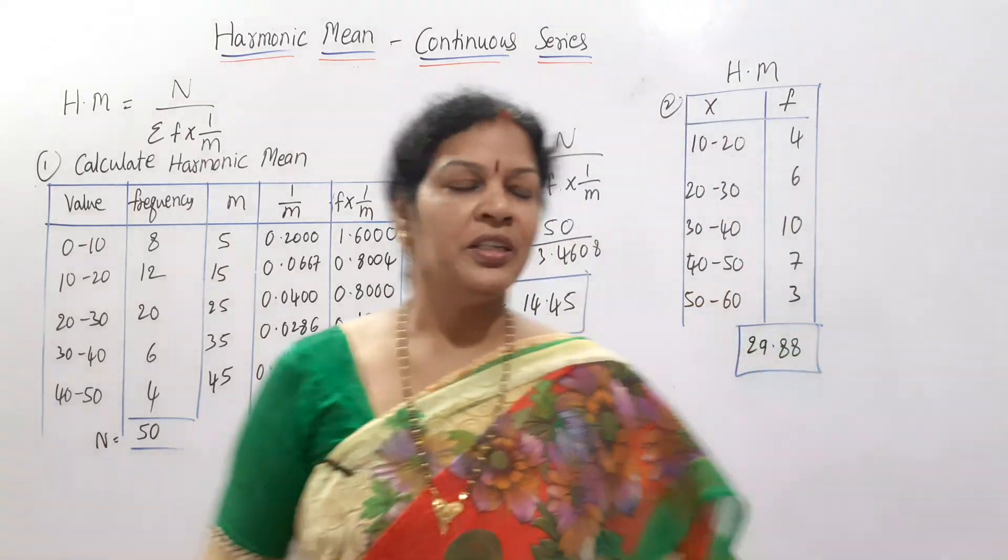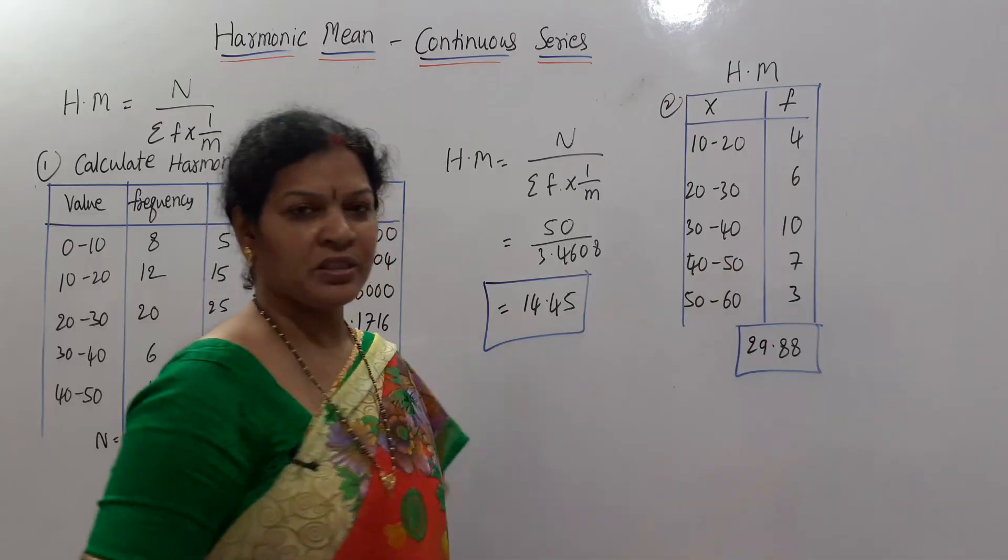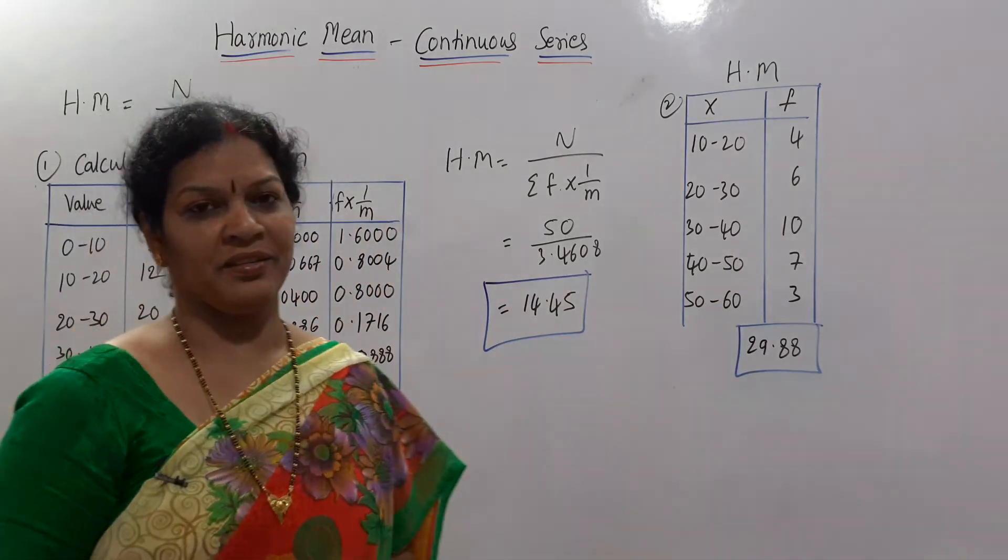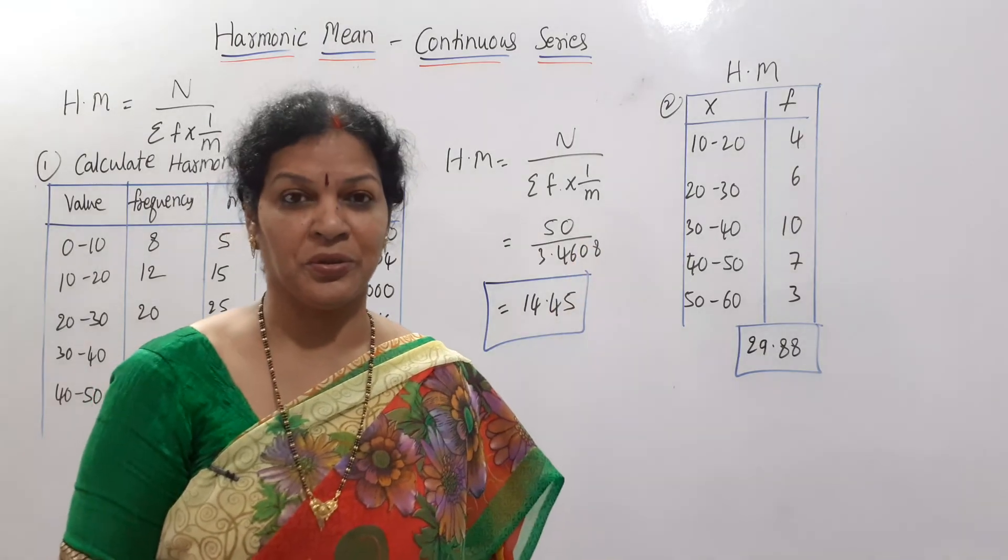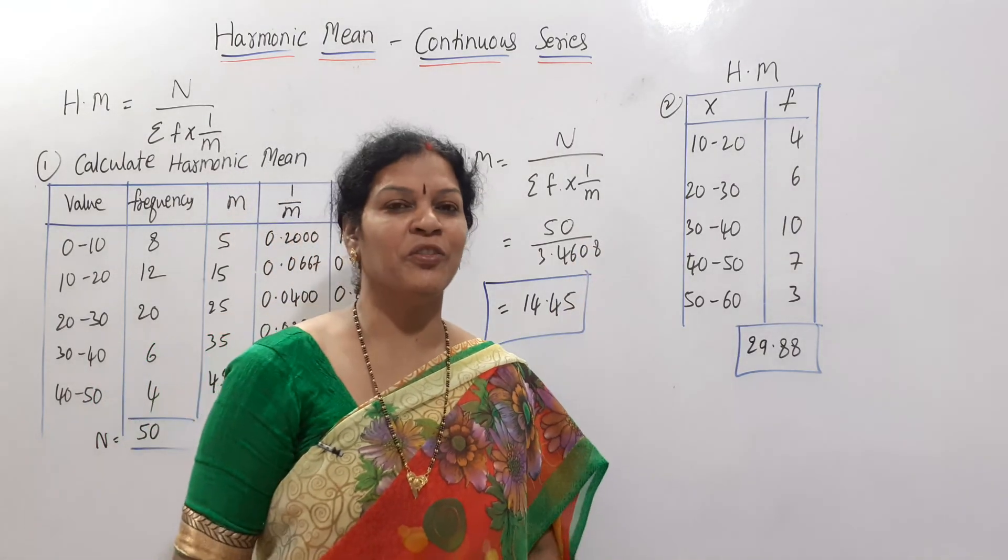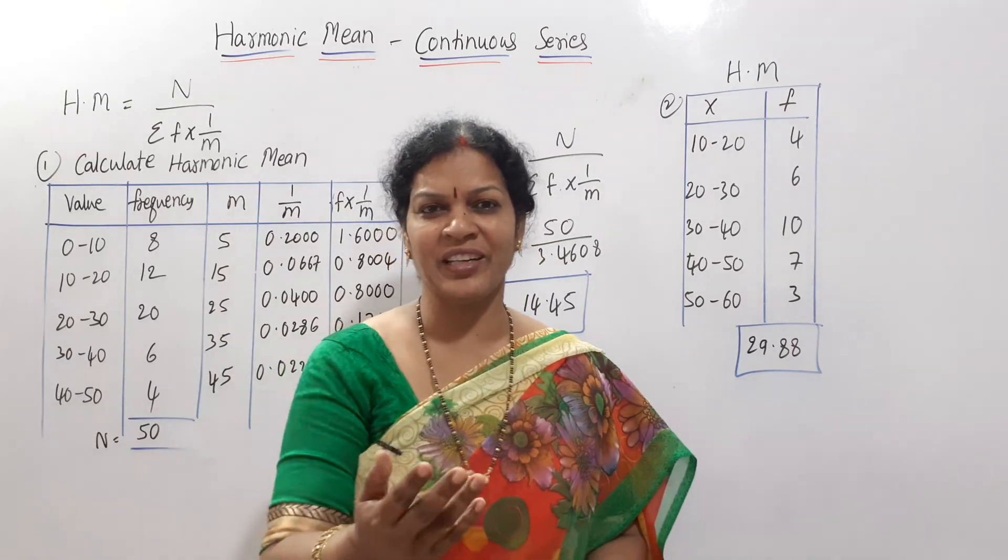If you understood, here is the problem for your homework. X values are given, frequency is given. Same pattern. Your answer must be 29.88. How many of you are getting? Let me know in the comment box. I need your feedback because I can't see you all.